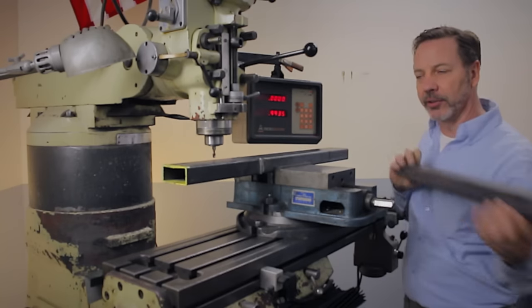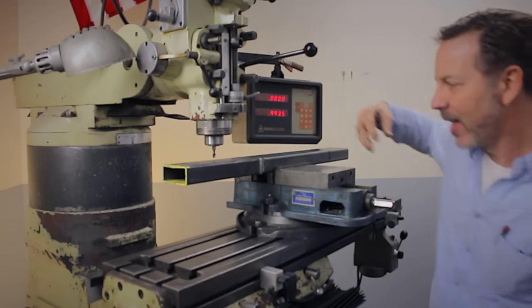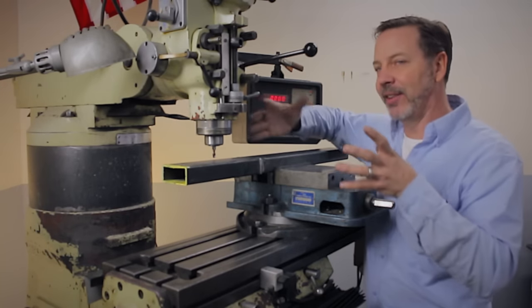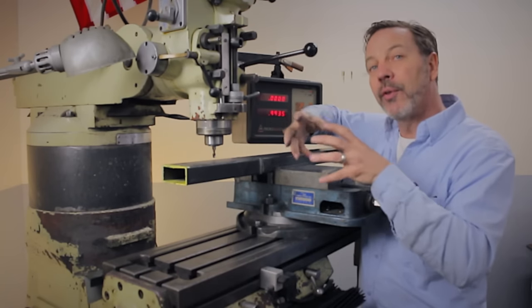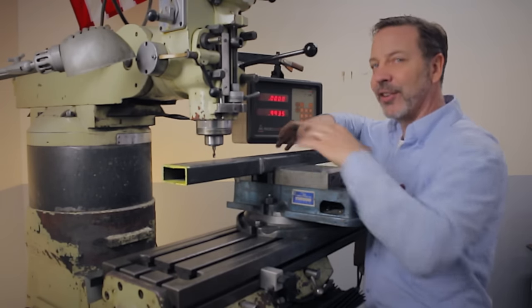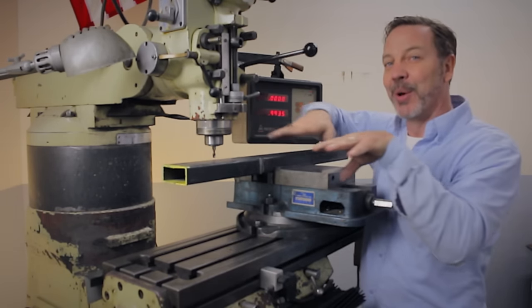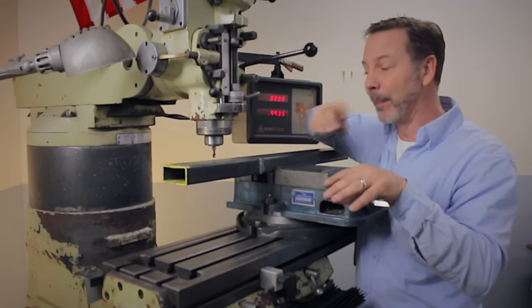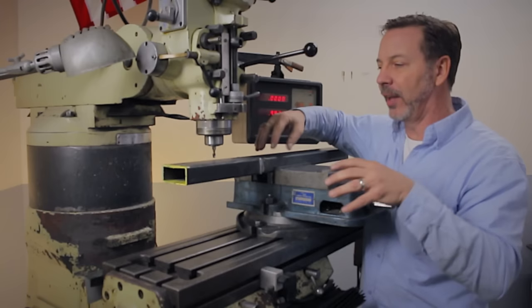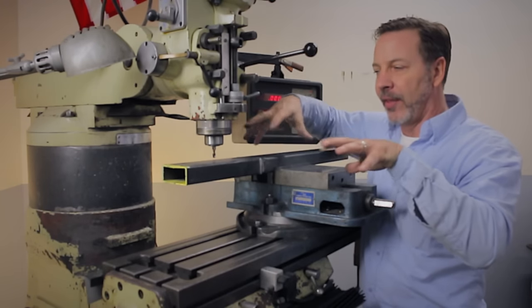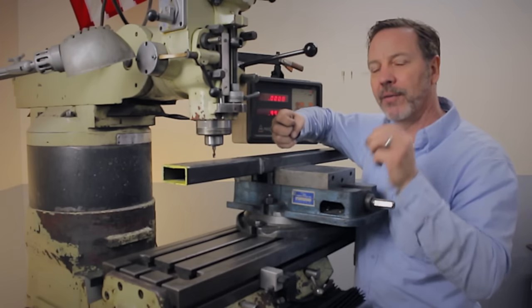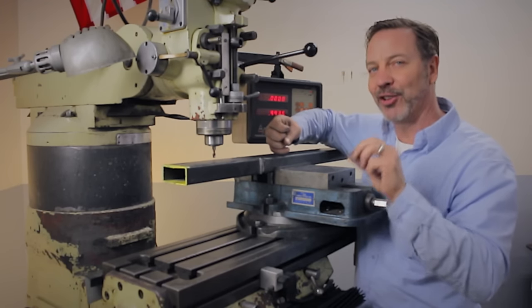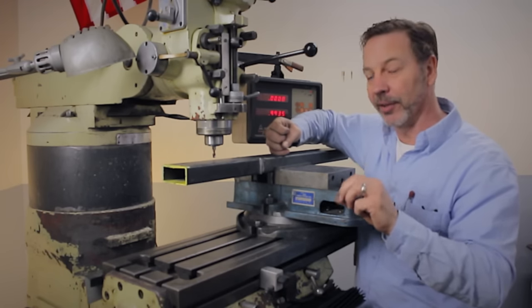Because of the forces that it takes to bend the steel and manufacture it, those forces are still in the steel and want to go back to being flat, believe it or not. So when we start cutting on this, the forces that are all bound up are going to be released, and we have to be very careful to control those to make sure they're favorable to us.